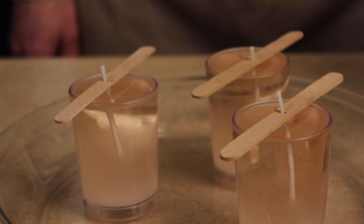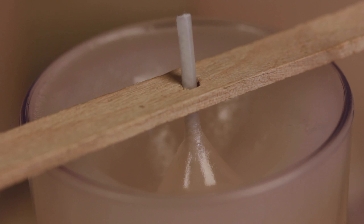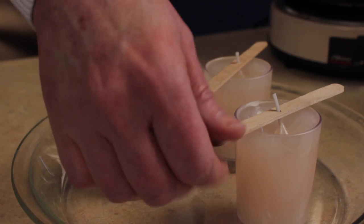As the wax in each votive mold begins to cool, it will harden and shrink. In about 30 to 45 minutes, a well will develop around the wick. When this happens, it's time for the second pour.